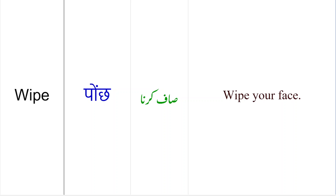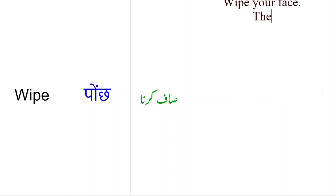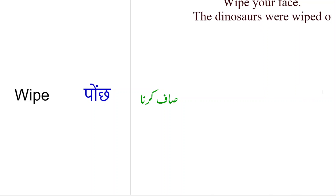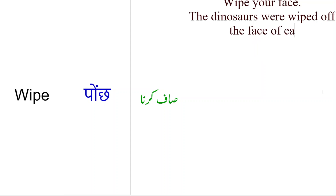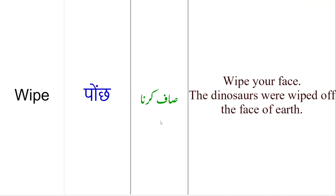Iske alawah doston, wipe us meaning mein bhi use hota hai jab koi cheez hatani ho, wipe karni ho. Jis terah apne blackboard ko saaf karna hai to 'wipe off' ka word aap use kerenge. Jis terah safai hasti se dinosaurs mit gaye, toh wahan bhi hum wipe ka word use kerenge. Jis terah yahan peh sentence hai: 'The dinosaurs were wiped off the face of the earth' — zameen ke oopar se jo dinosaurs the, wo bilkul khatam ho gaye. Toh yahan bhi hum ne wiped ya wipe off ka word use kia hai.